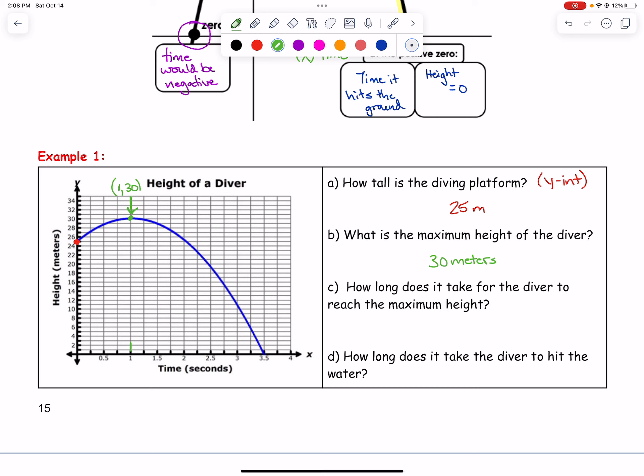At one second, that's when they reach their maximum height of 30 meters. How long does it take the diver to hit the water? To hit the water is over here on the x-axis at three and a half. That means after three and a half seconds, the diver reached the water.